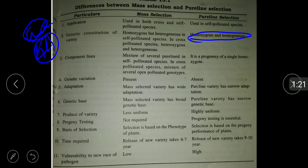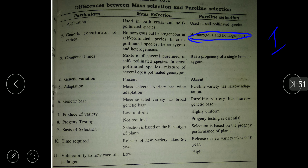In mass selected varieties, different phenotypic expressions can be observed, but the genetic constitution of individual plants is homozygous. Mass selection is a mixture of several pure lines in self-pollinated species, or a mixture of several open-pollinated genotypes in cross-pollinated species. Pure line selection is a progeny of a single homozygous plant.